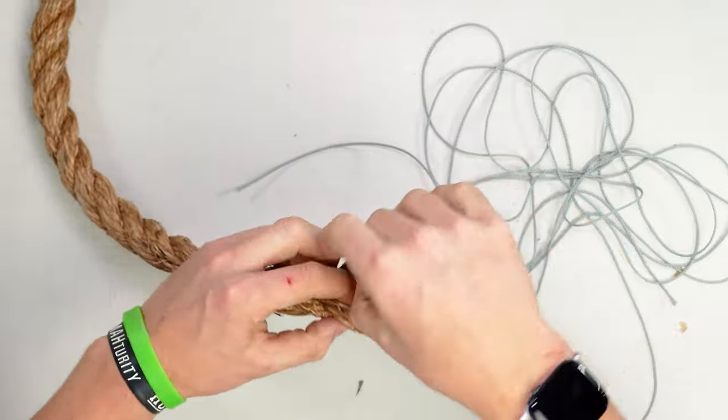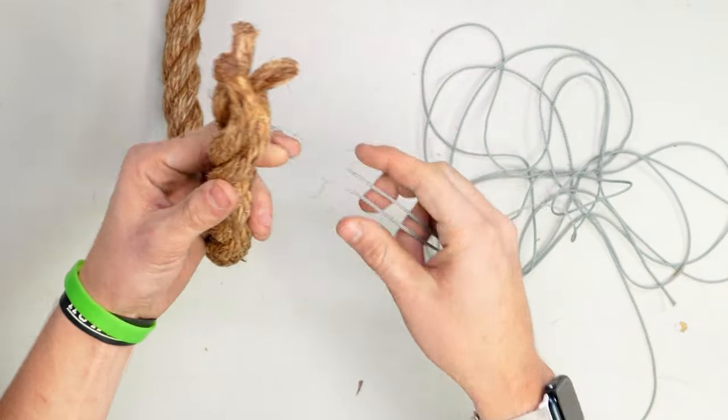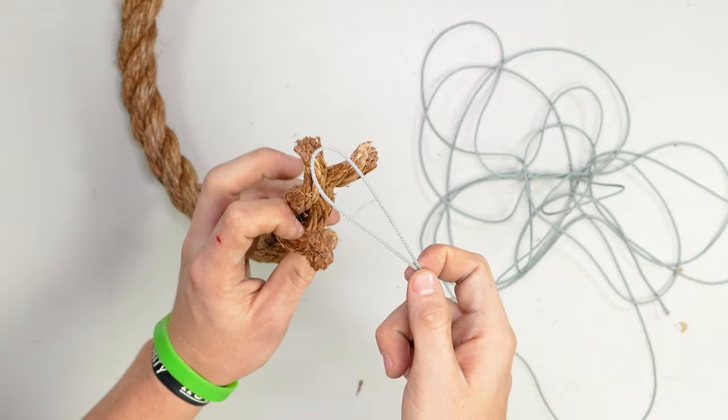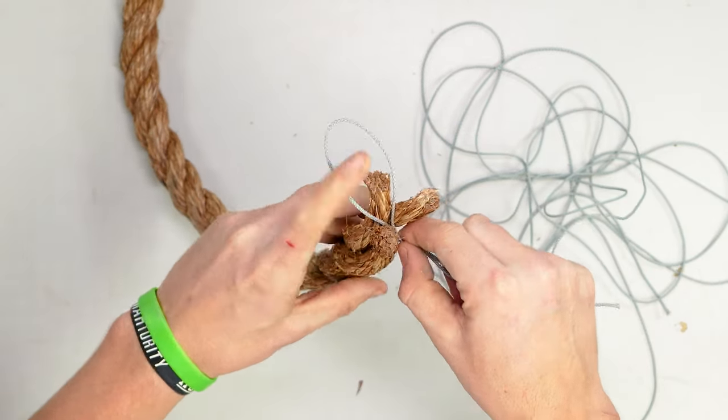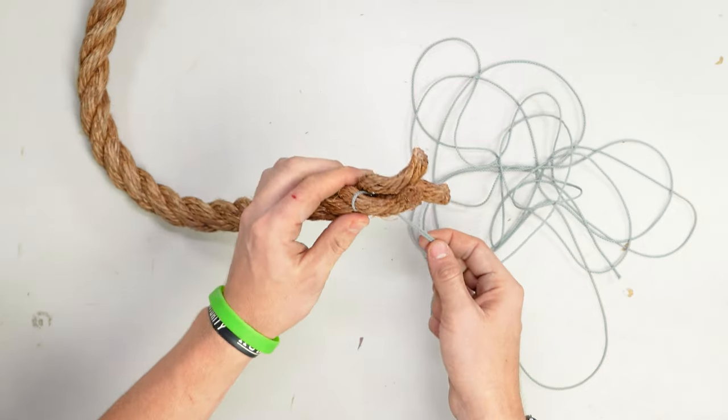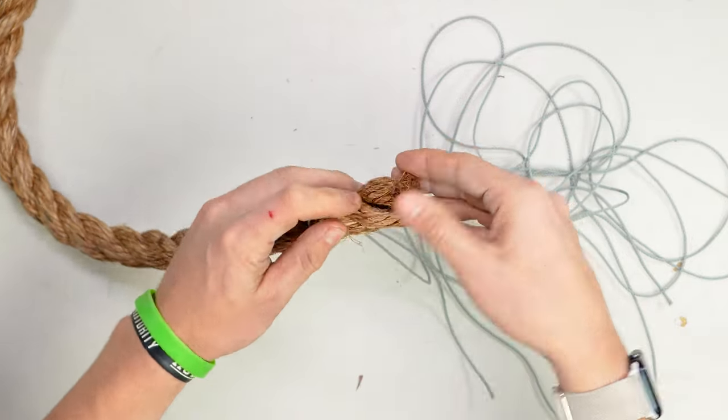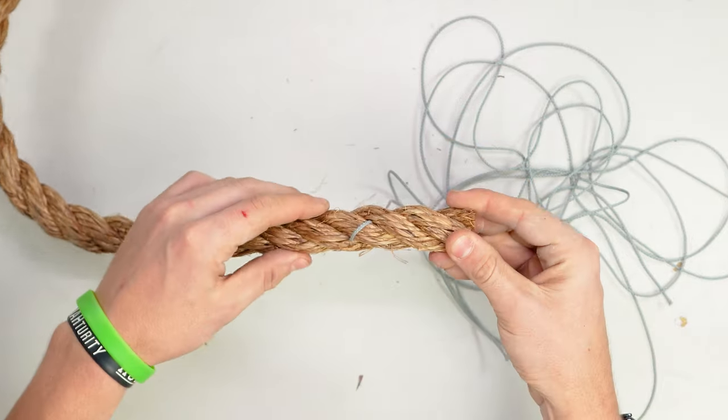Unlay your rope a couple inches down and then take the end of your whipping twine, make a bunny ear, and then set it over one of the strands of rope and running it through the other two on the other side. Then relay your rope like so.